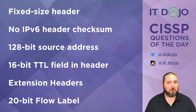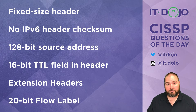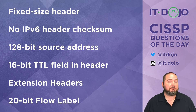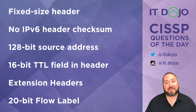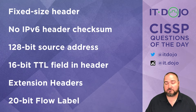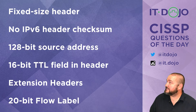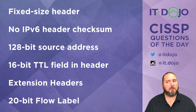The first option says that IPv6 has a fixed-size header — that is absolutely true. The header in IPv6 is 40 bytes in length and it is always 40 bytes. Contrast that with IPv4, which has a variably sized header, which is also why IPv4 has a header length field and IPv6 does not. You don't need a header length field if the header is always the same size.